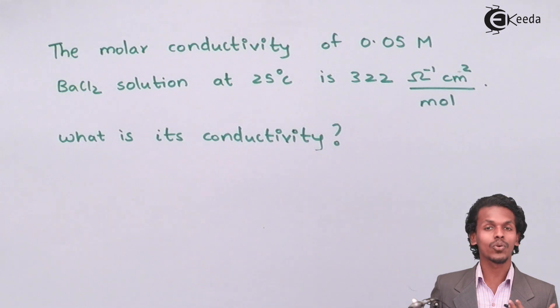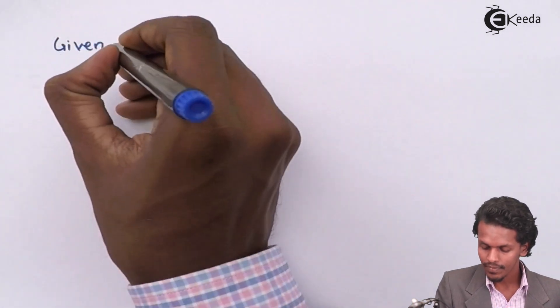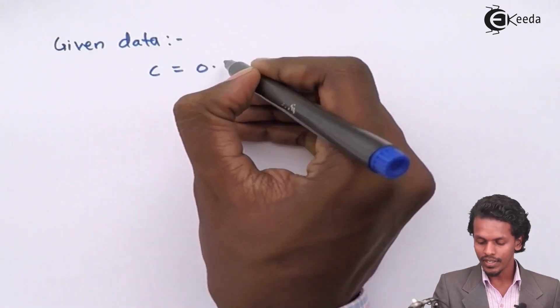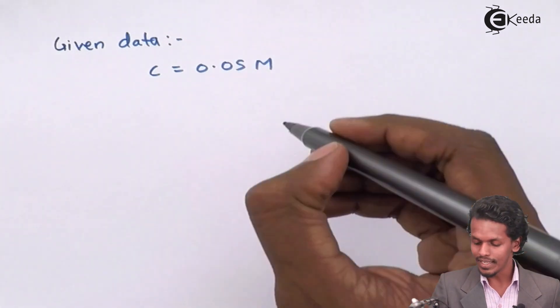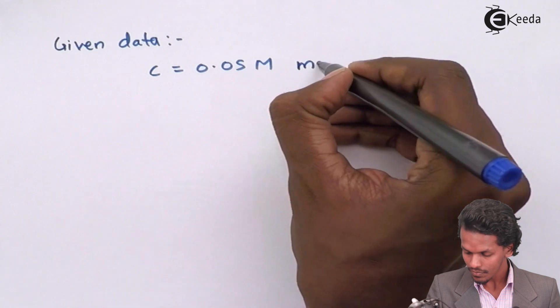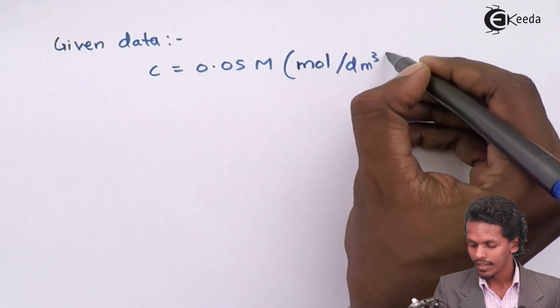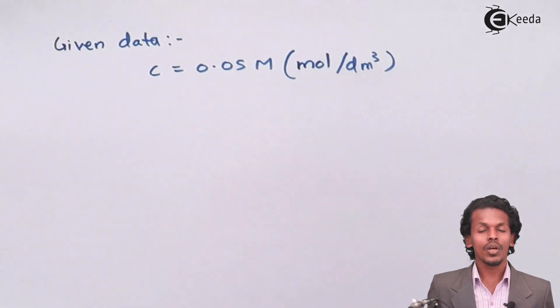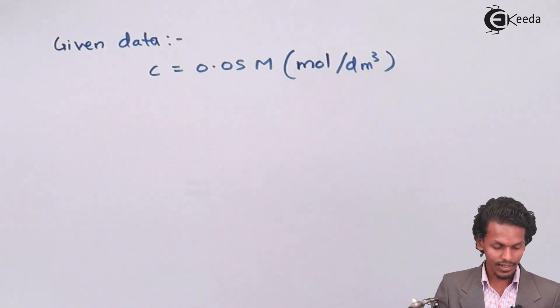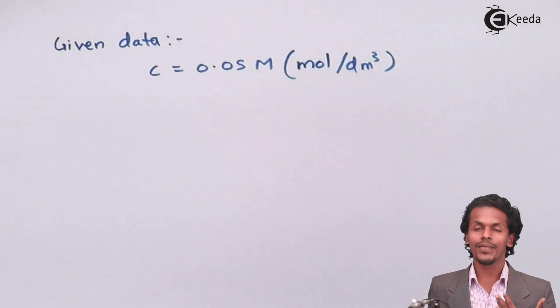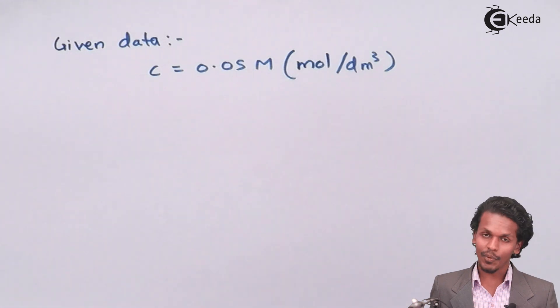First, we extract the data. The concentration is 0.05 moles per decimeter cube. They provided temperature, but it has no role in this formula to estimate conductivity, so we can ignore it. The next thing provided is molar conductivity, represented by capital lambda.